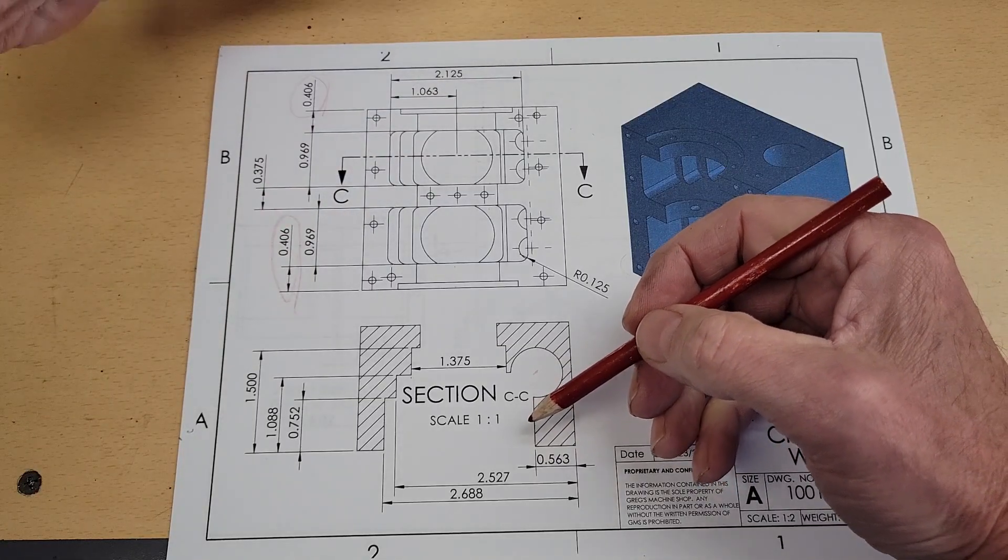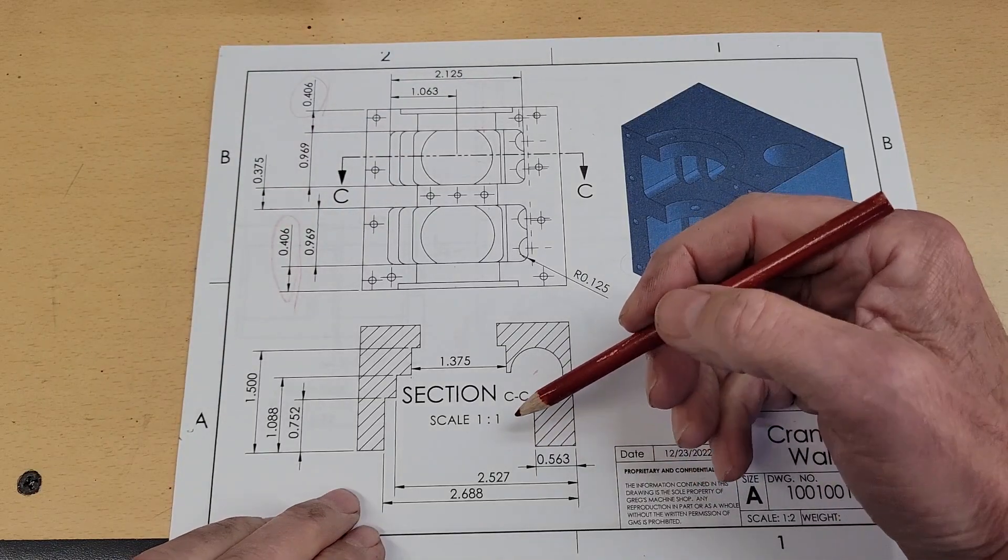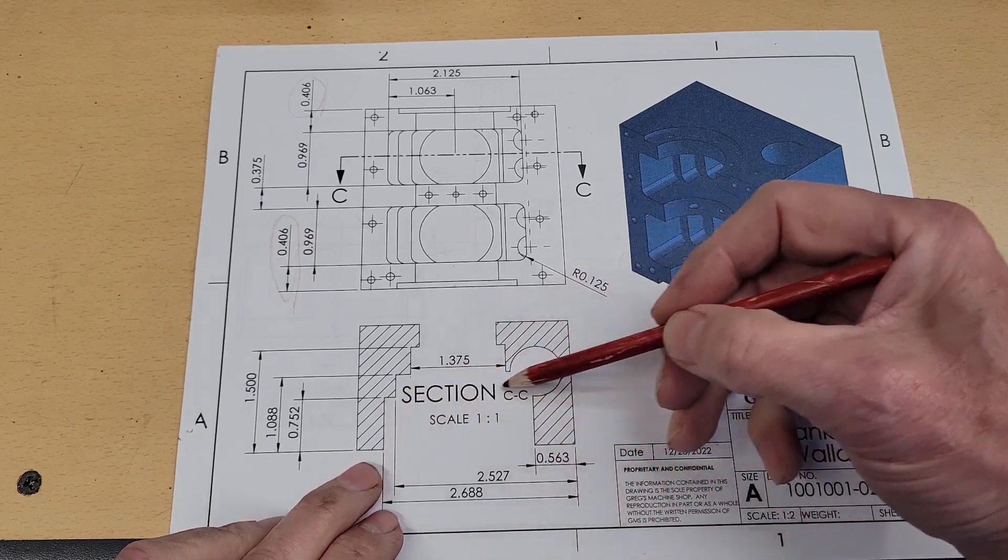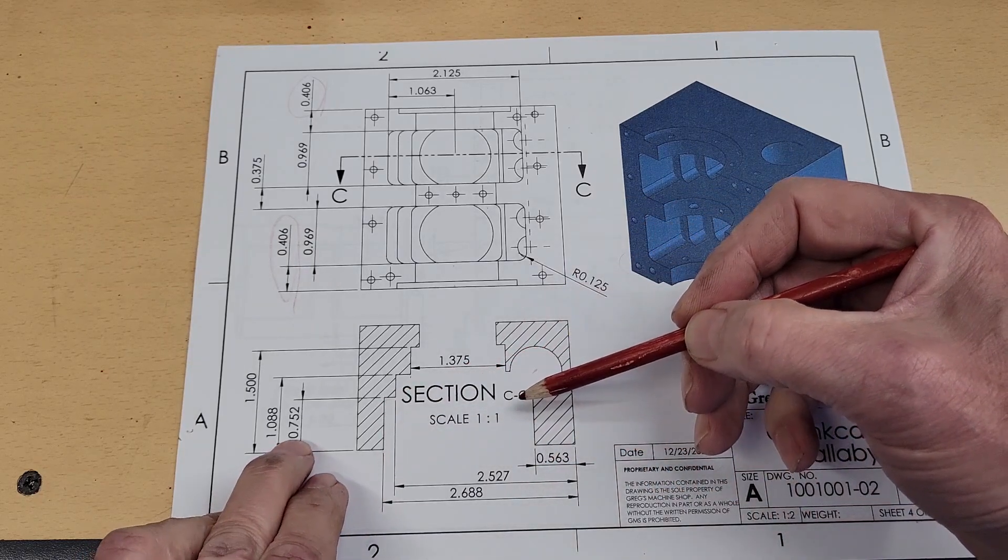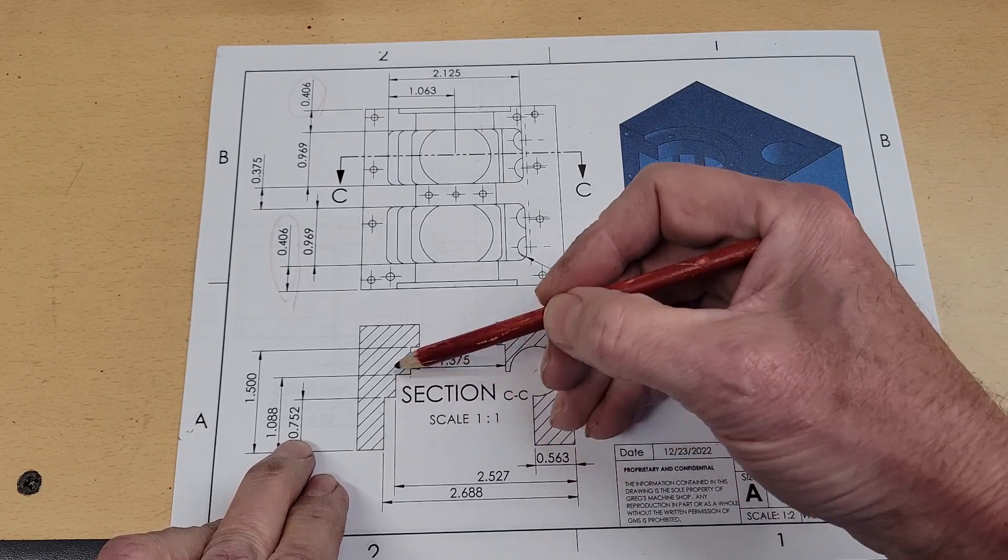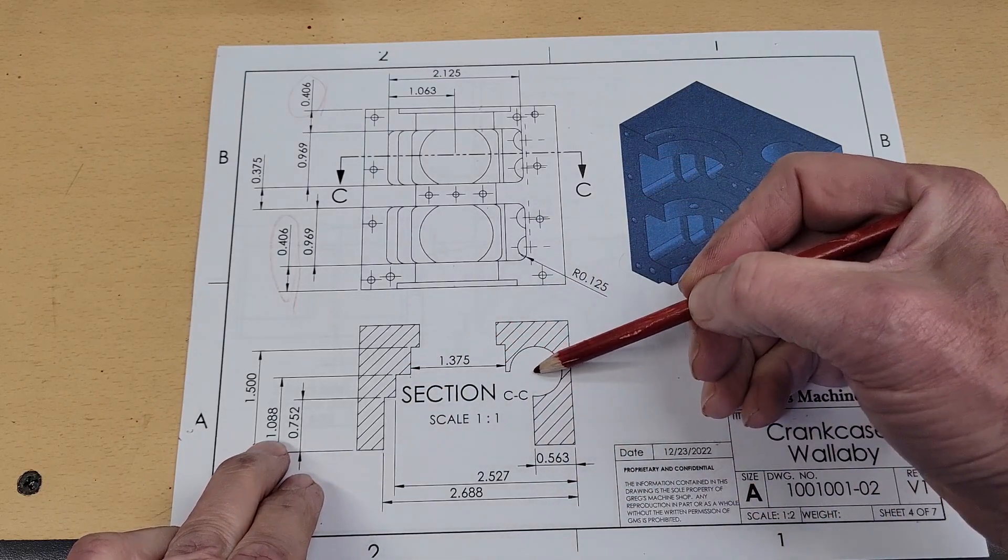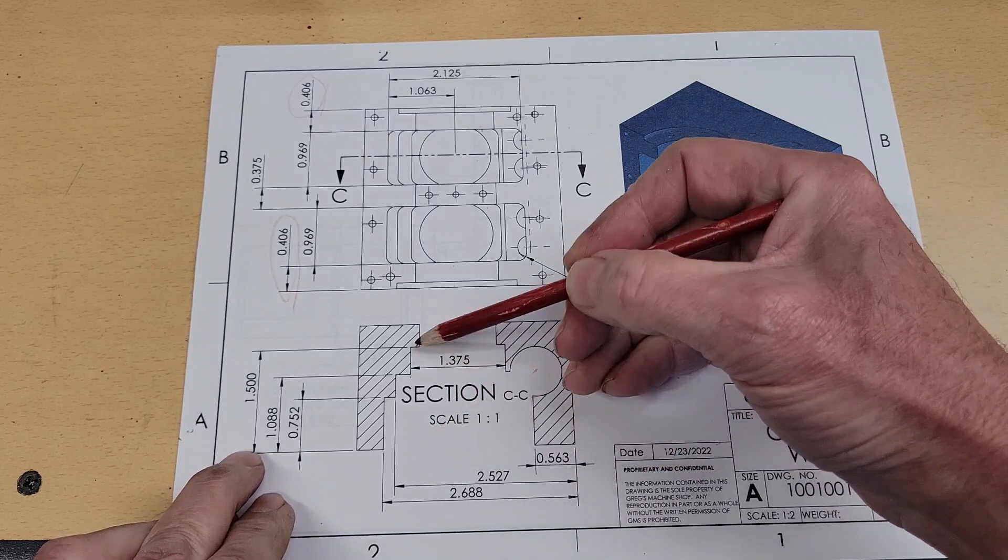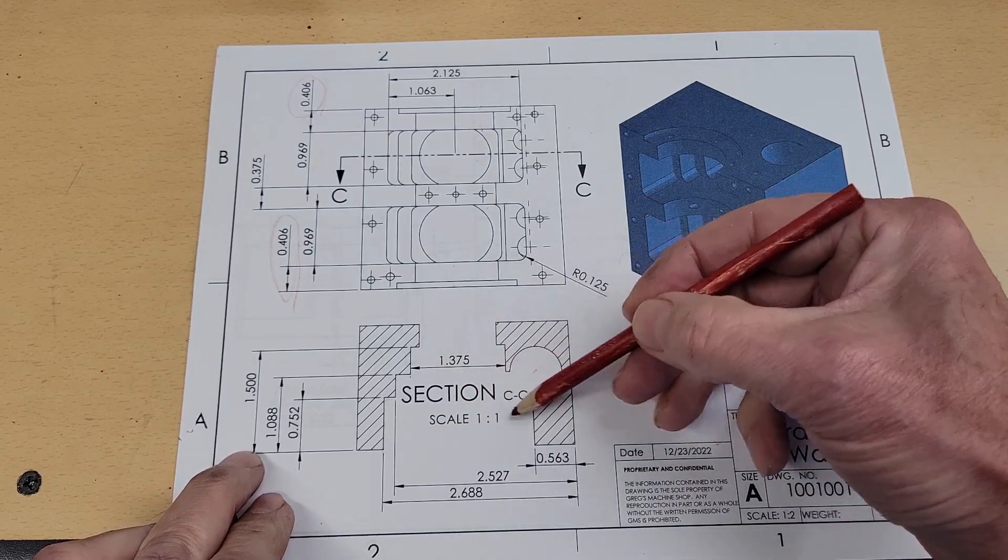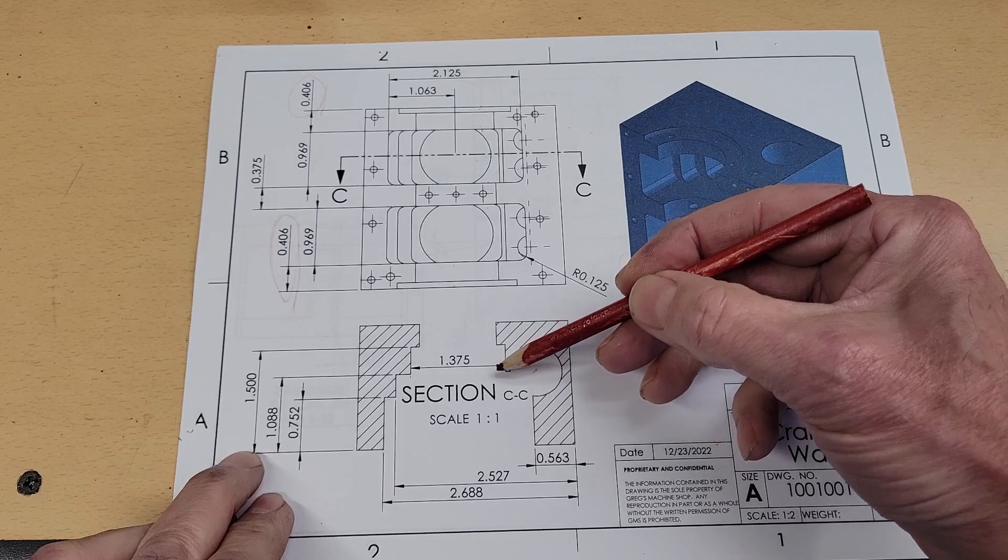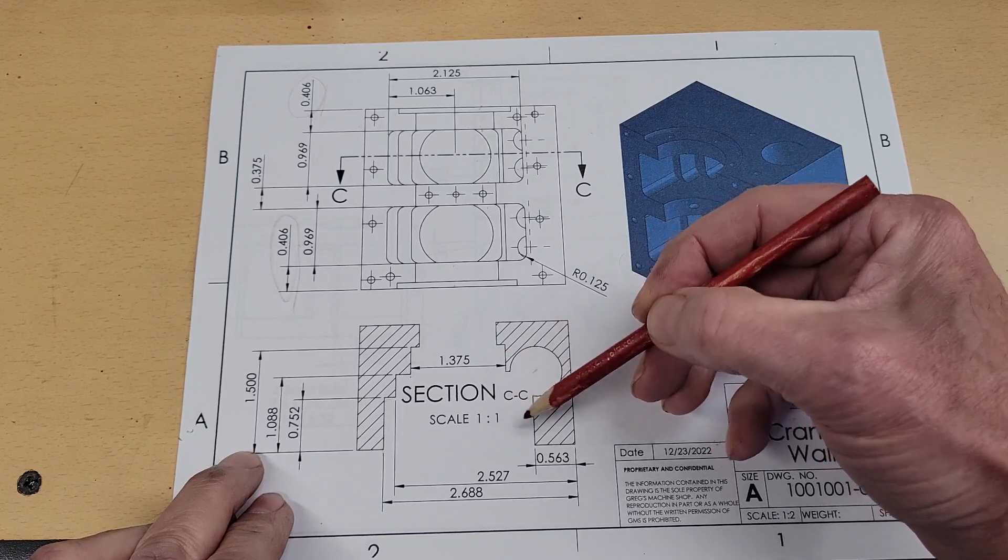Looking at the side profile, we've got three steps. The first step here is 752 deep. The second step is 1 1⁄8 of an inch deep. And the third step is 1 1⁄2 inches deep. We will be breaking into the camshaft bore on this side here.